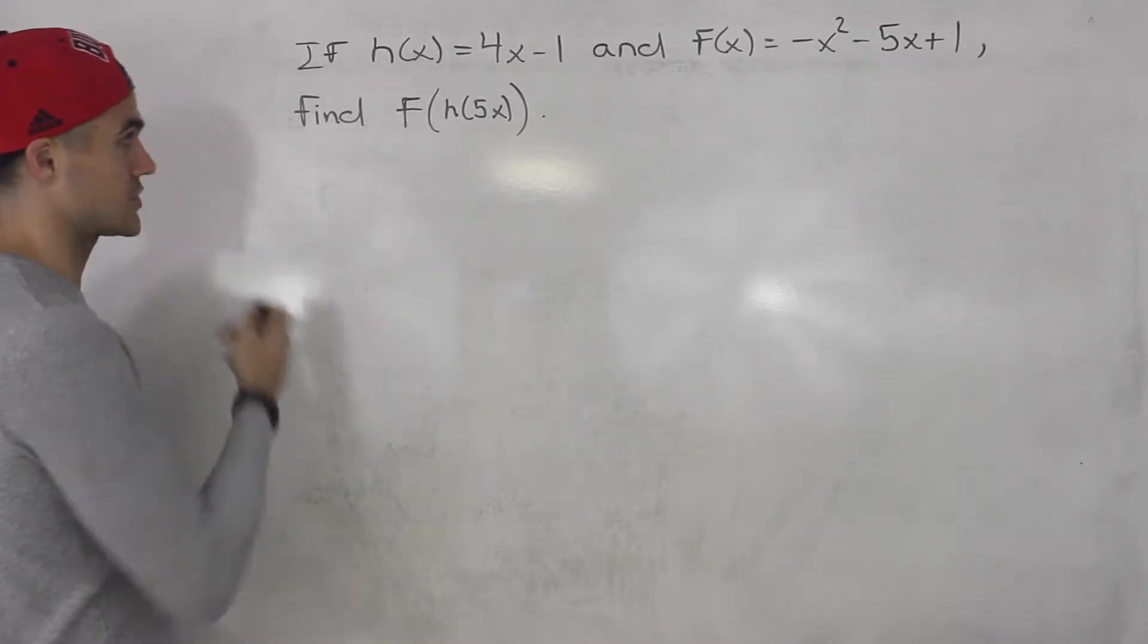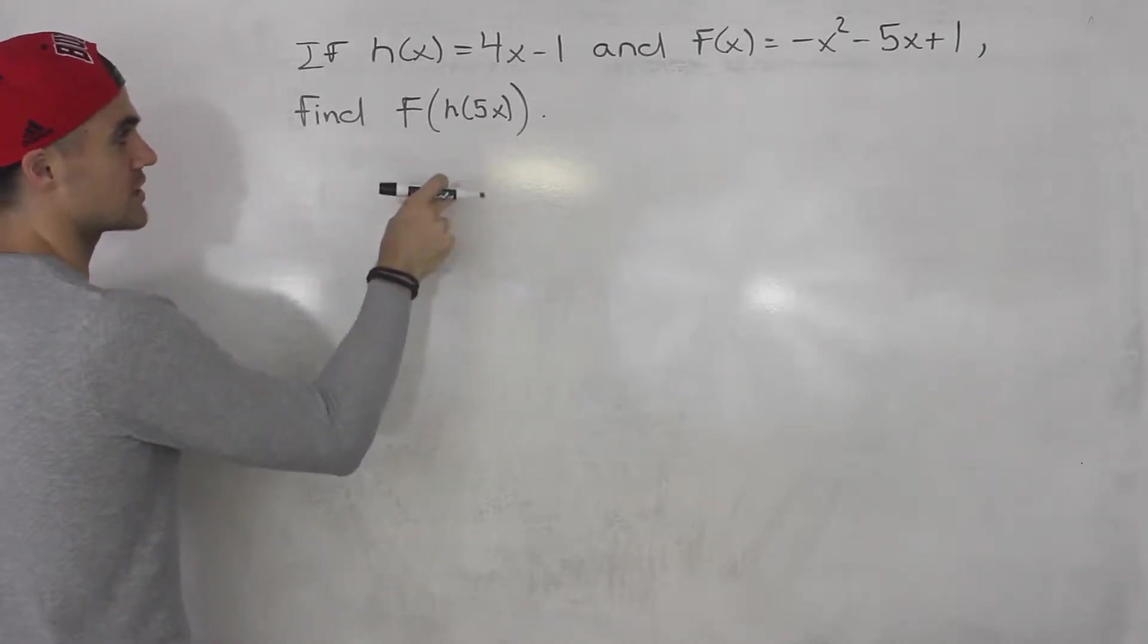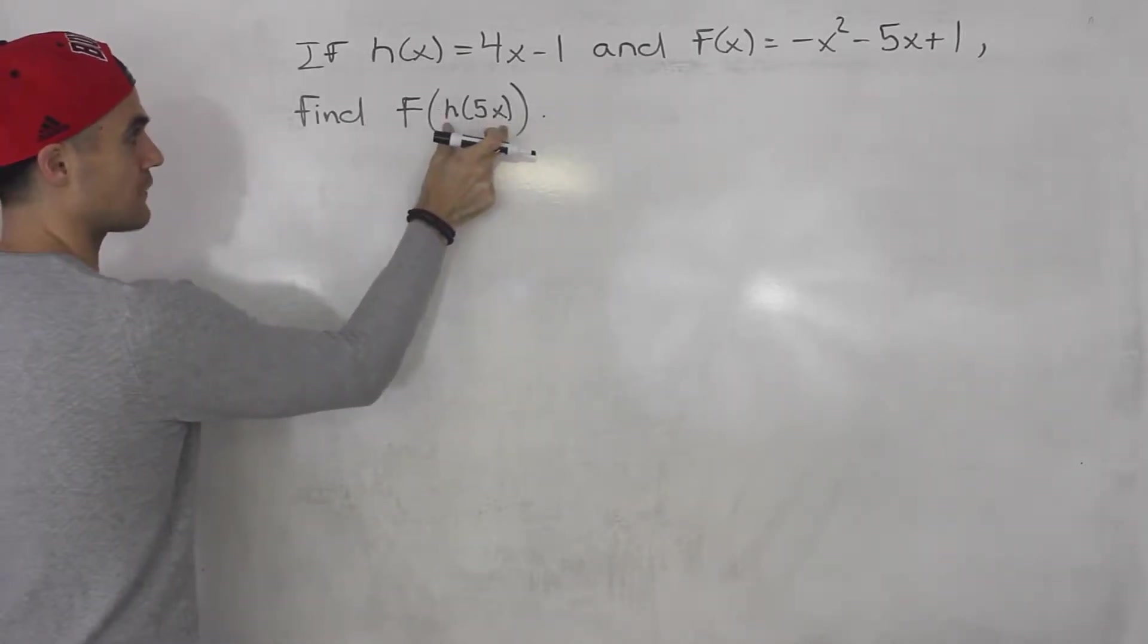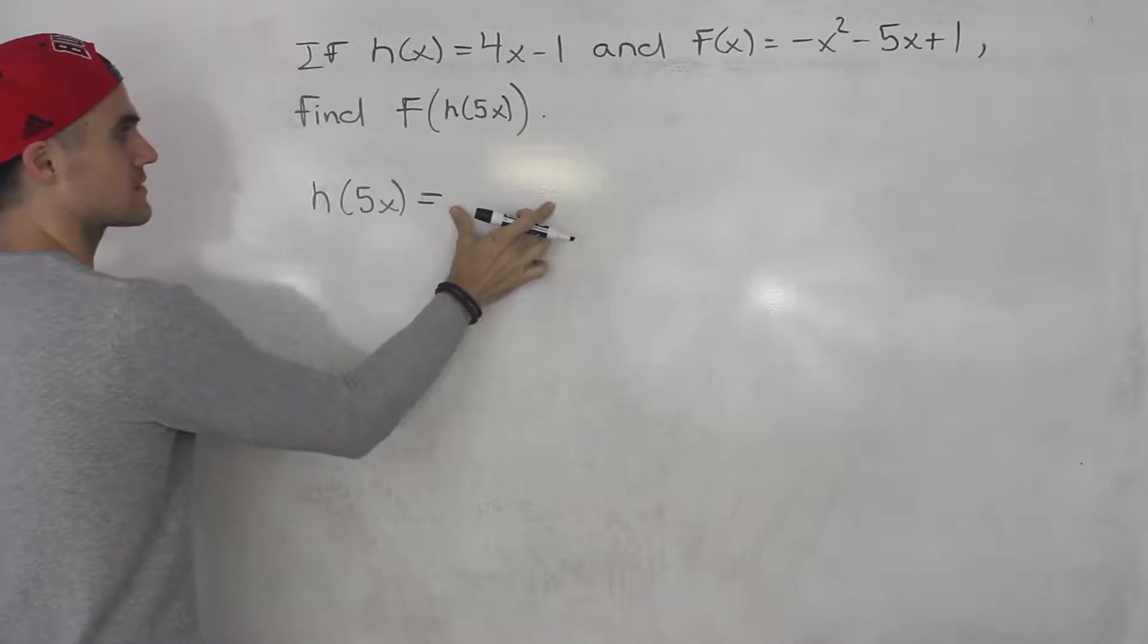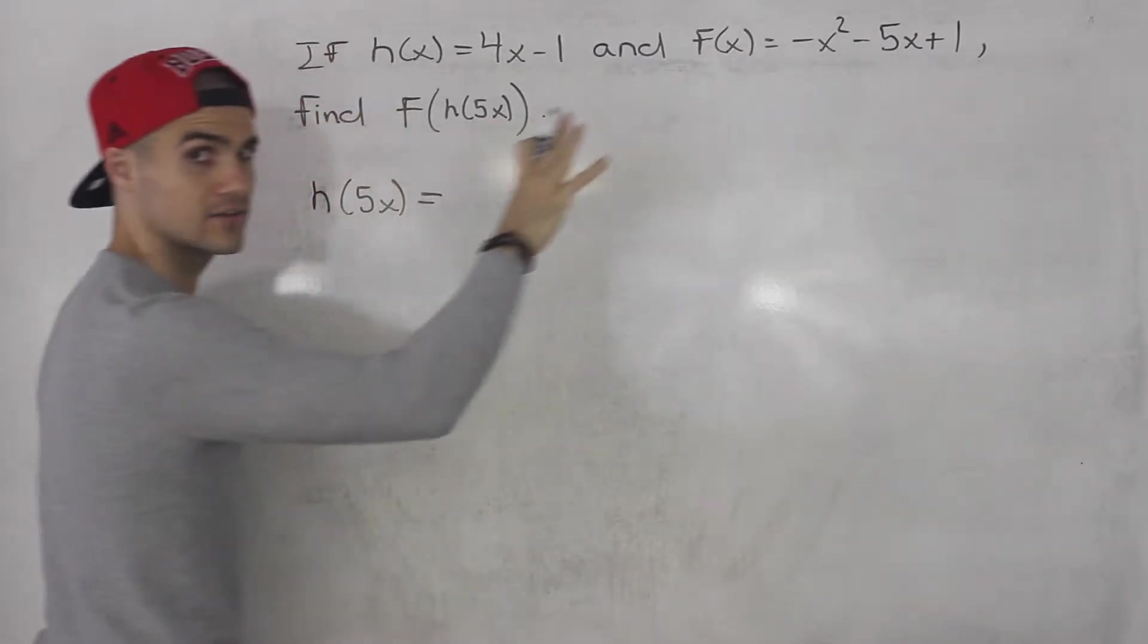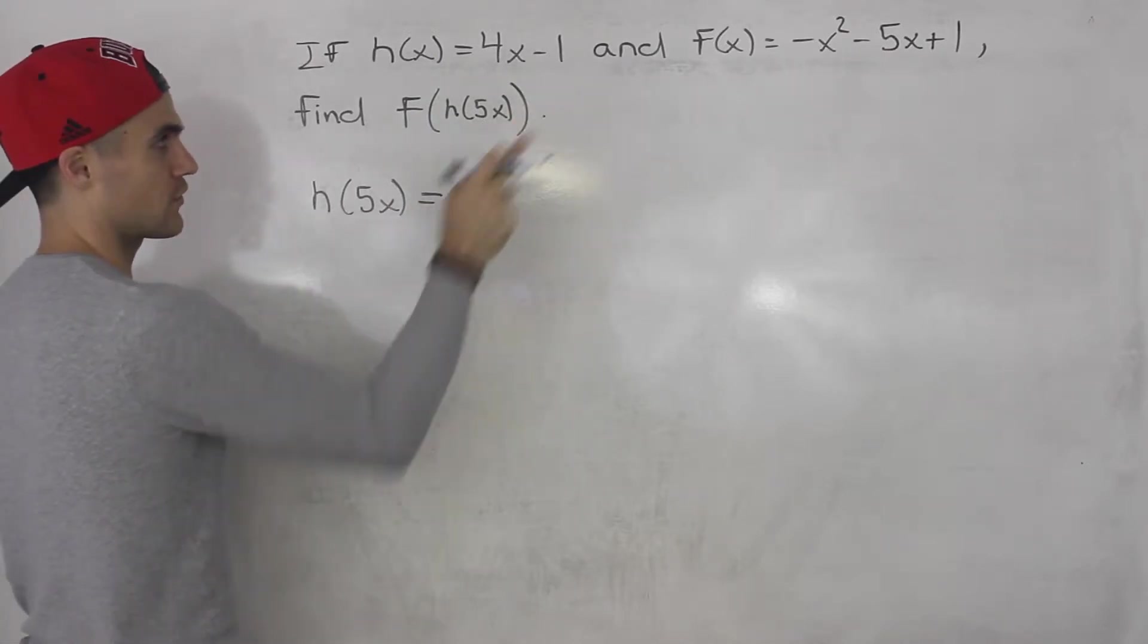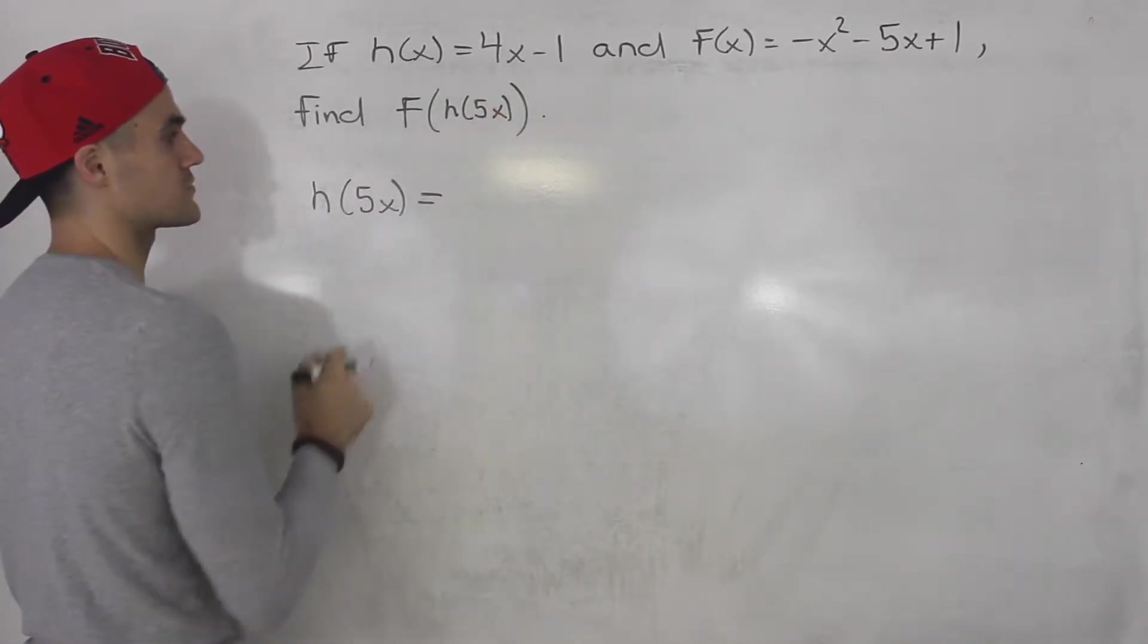So in this question, this is a function notation type of question, so we got to find first what h(5x) is. And then once we have h(5x), we have an expression for that, we could plug it into f(x) for all the x values. We got to do it in steps. So you always want to start with the innermost function first.